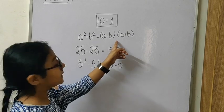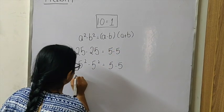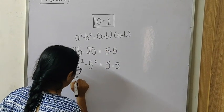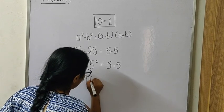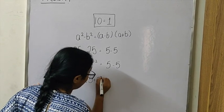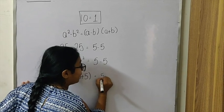You can enhance it into this way, which is (5 - 5) multiplied by (5 + 5) is equal to 5 minus 5.